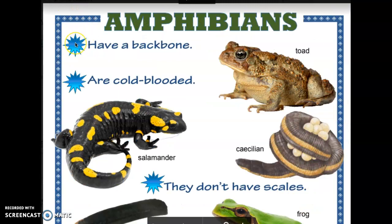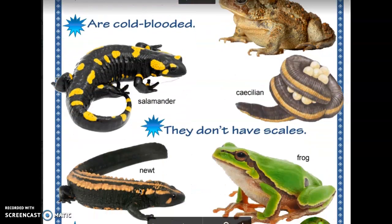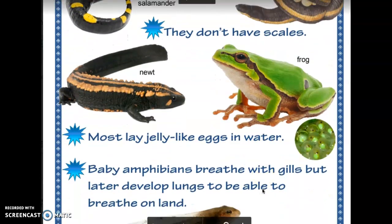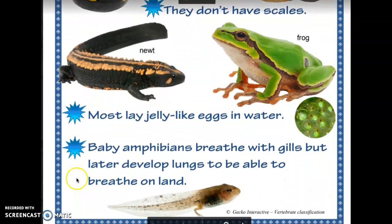Amphibians have a backbone, are cold-blooded, and baby amphibians breathe with gills, but later develop lungs to be able to breathe on land.